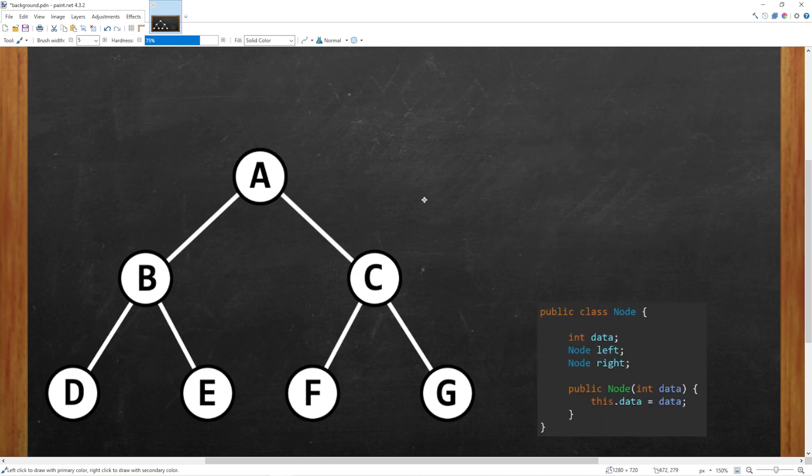In this example, we will be working with a binary tree, not a binary search tree, because these values are not in binary search tree order. So each node has at most two children, a left node and a right node.